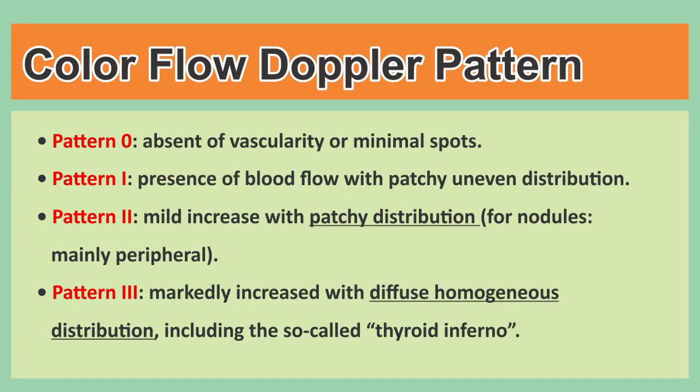Color flow patterns of the thyroid gland are of four types. Pattern 0 is absent vascularity, or if present it will appear as minimal spots. Pattern 1 shows presence of blood flow with patchy and uneven distribution. Pattern 2 is mildly increased flow with patchy distribution, and pattern 3 is markedly increased blood flow with diffuse homogenous distribution.